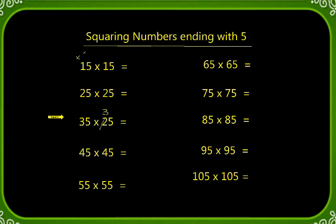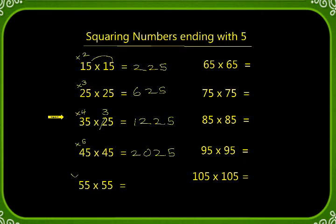What is step 1? Multiply the first digit 1 to the next consecutive number: 1 times 2 is 2, 5 times 5 is 25. Same manner: 2 times 3 is 6, 5 times 5 is 25. All the answers end up with 25. Now 3 times 4 is 12, 5 times 5 is 25. 45 squared: next number is 5, 4 times 5 is 20, 5 times 5 is 25. 55 squared: next number of 5 is 6, 5 times 6 is 30, 5 times 5 is 25.